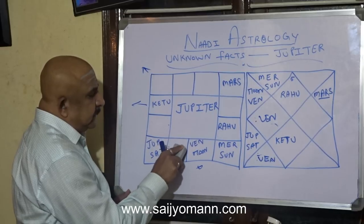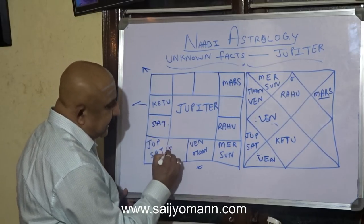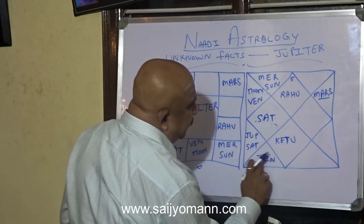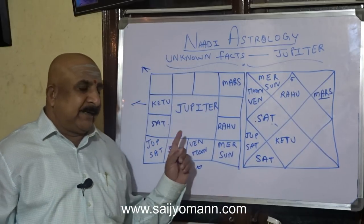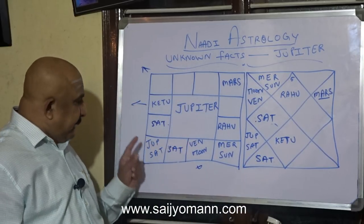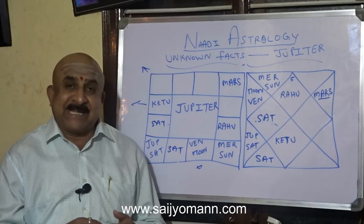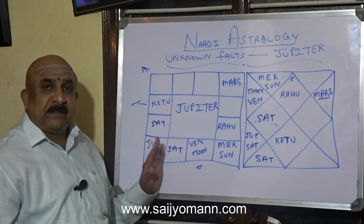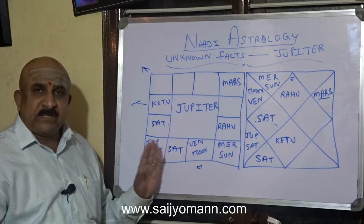Saturn besides Jupiter in either the following or preceding Rasi — when Saturn is placed in one of these two adjacent houses, it says clearly that there is a vacant space, and in that space you will find junk or garbage.